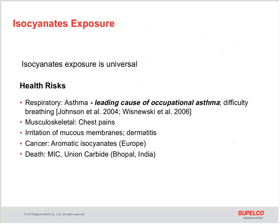Isocyanate exposure is universal — it's everywhere, because polyurethanes are everywhere. Exposure levels vary by environment. Health risks associated with isocyanate exposure are numerous, from respiratory disorders such as asthma, to chest and abdominal pains, reproductive issues, to even death from lethal exposure to the highly volatile isocyanate MIC, or methyl isocyanate. Methyl isocyanate was used as a component in making an agricultural pesticide, Aldicarb. It was released into the environment in Bhopal, India in 1984, resulting in thousands of deaths, birth defects, and other deformities. Currently, some isocyanates are now being considered as cancer suspect agents — most of the aromatic type monomers.